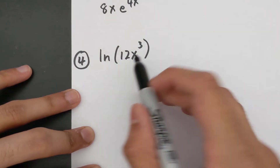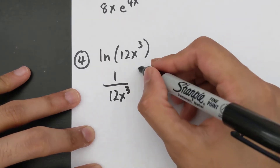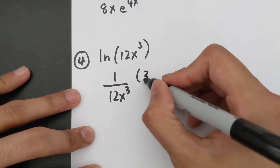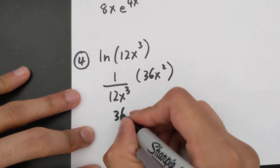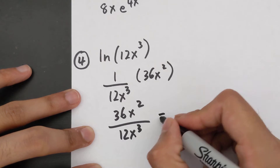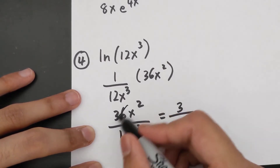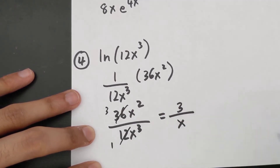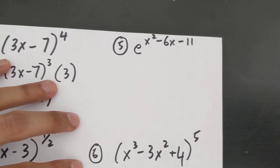The derivative of a ln function is 1 over that function — so 1 over 12x³ — then multiplied by the derivative of the inside, which is 36x². This simplifies to 36x² over 12x³, which simplifies further to 3 over x, because 36 and 12 cancel to 3, and x² and x³ cancel leaving x in the denominator.